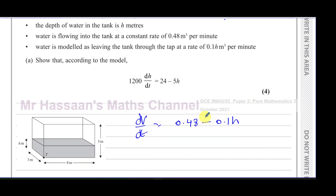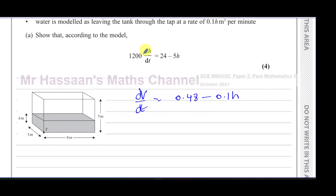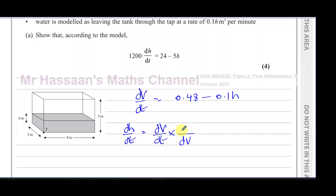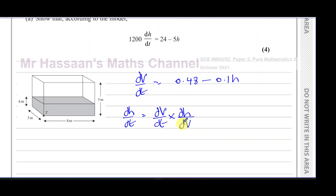We want a differential equation in terms of dh/dt, but we're given dV/dt. To convert, I use the chain rule: multiply dV/dt by dh/dV so that dV cancels and we're left with dh/dt. So I need to find dh/dV — the rate of change of height with respect to volume.